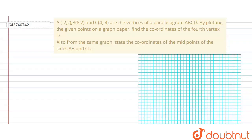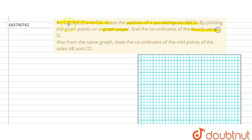Hello students. This is the problem where A, B and C are the vertices of a parallelogram ABCD. By plotting the given points on the graph paper, find the coordinates of the fourth vertex D.